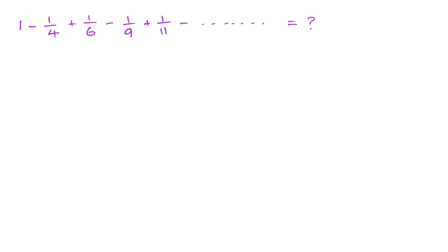Hello everyone, welcome to the Mathematics of My channel. In this video we are going to solve this nice infinite series: 1 minus 1/4 plus 1/6 minus 1/9 plus 1/11 minus 1/14, going to infinity. I think you saw the thumbnail, so we know the answer is π/5 times cotangent of π/5.